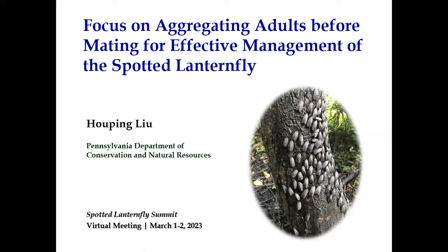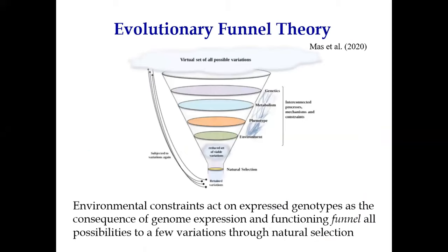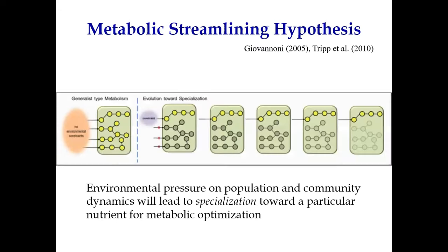Here's my reasoning. Before we get into that, I would like to introduce two concepts. One is the evolutionary fauna series — meaning environmental constraints act on genotypes and funnel all possibilities to fewer entities through natural selection. Another concept is the metabolic streamlining hypothesis, which means under environmental pressure, species will be forced to specialize toward a particular nutrient for metabolic optimization.